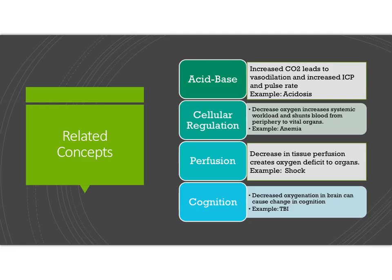There are numerous concepts related to oxygenation, covered on page 1026. It is closely tied to acid-base, cellular regulation, perfusion, and cognition. For acid-base, we're learning about arterial blood gases or ABGs. With acidosis there is increased CO2, which is called hypercapnia. Hypercapnia leads to vasodilation and can cause increased intracranial pressure.